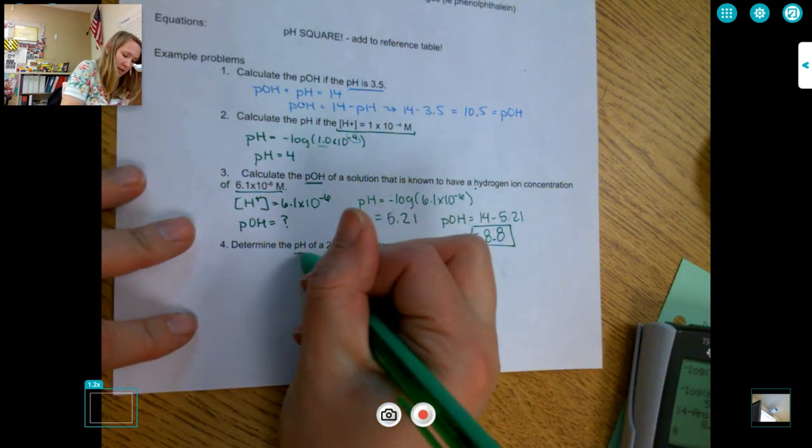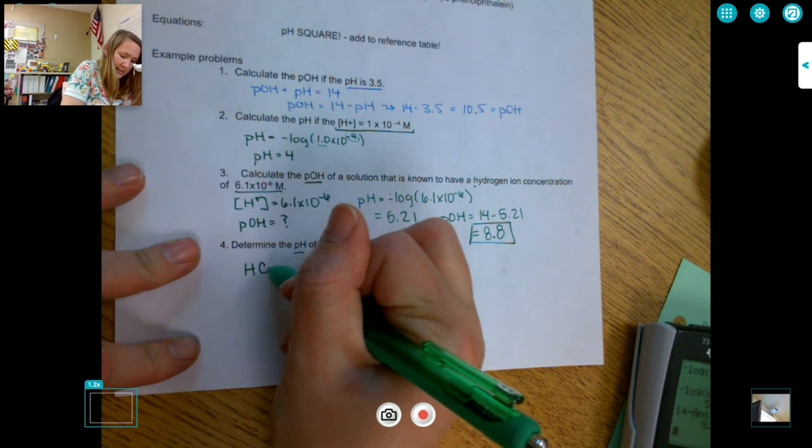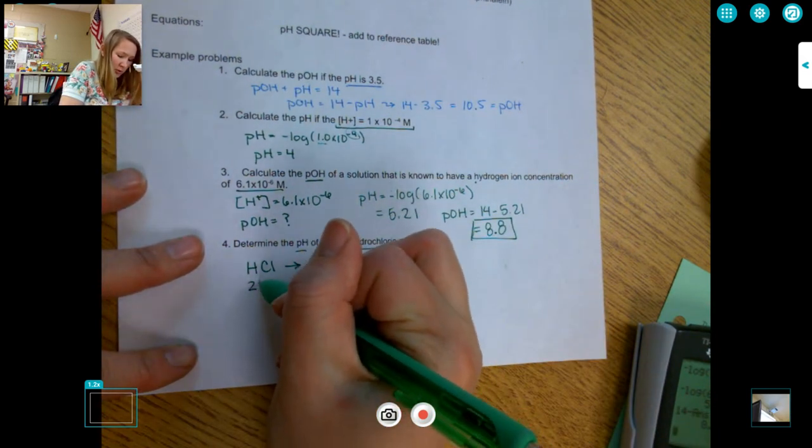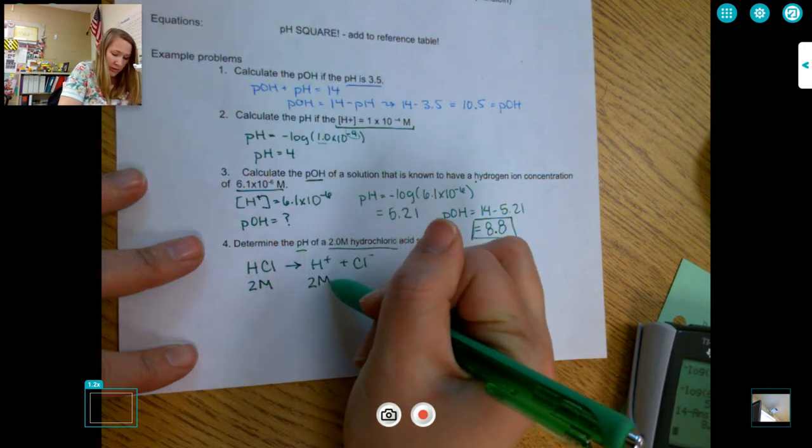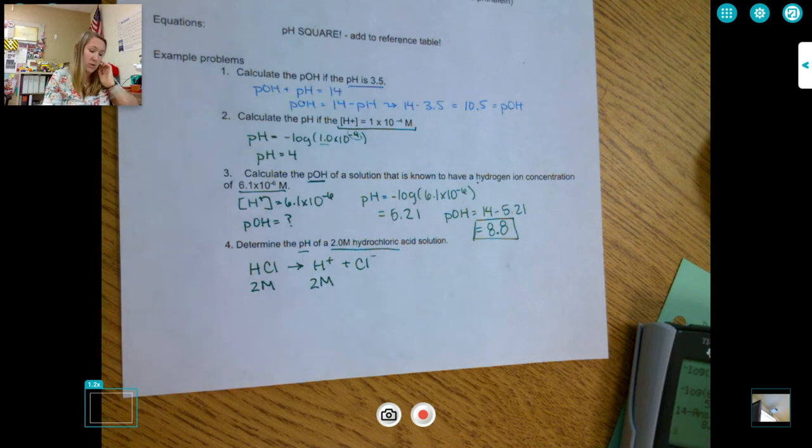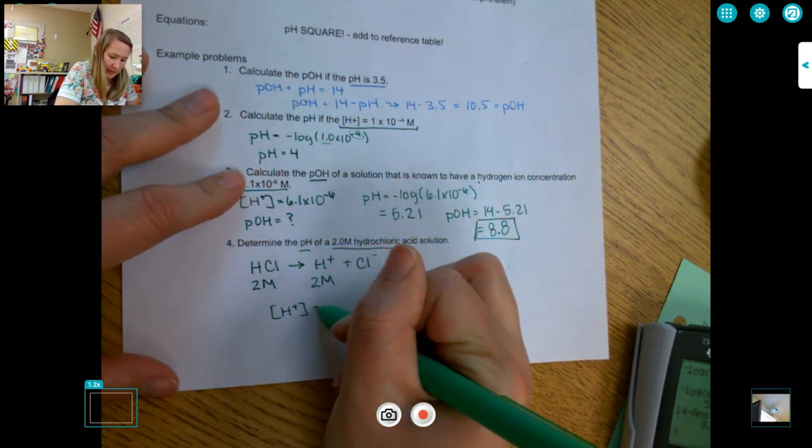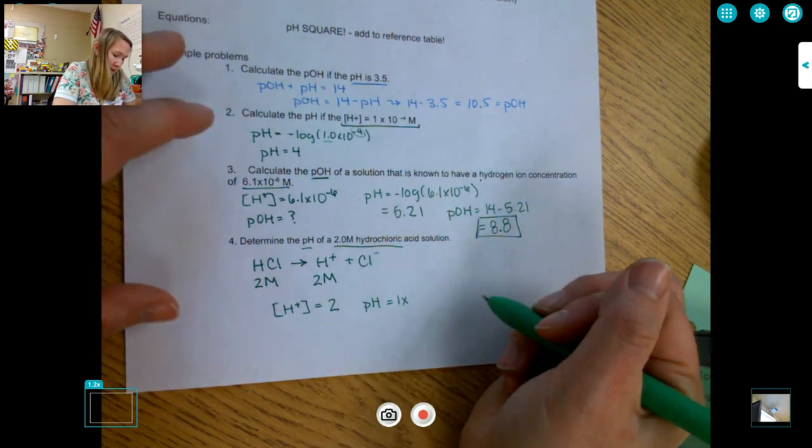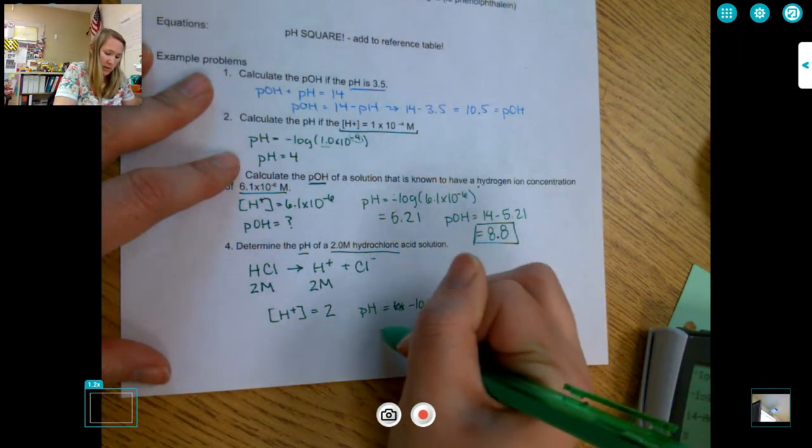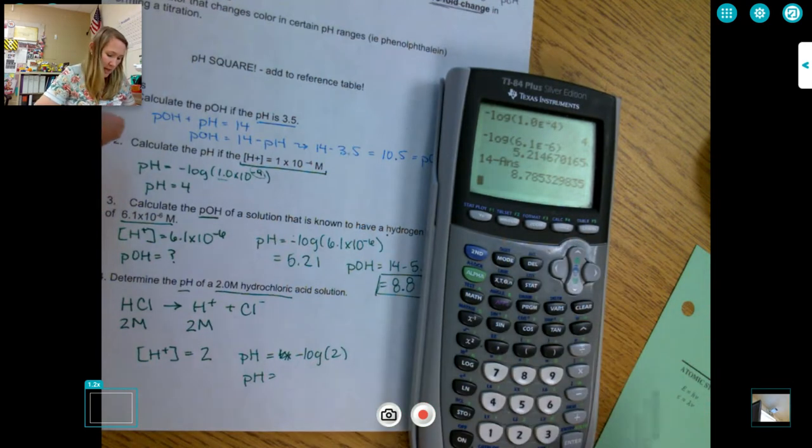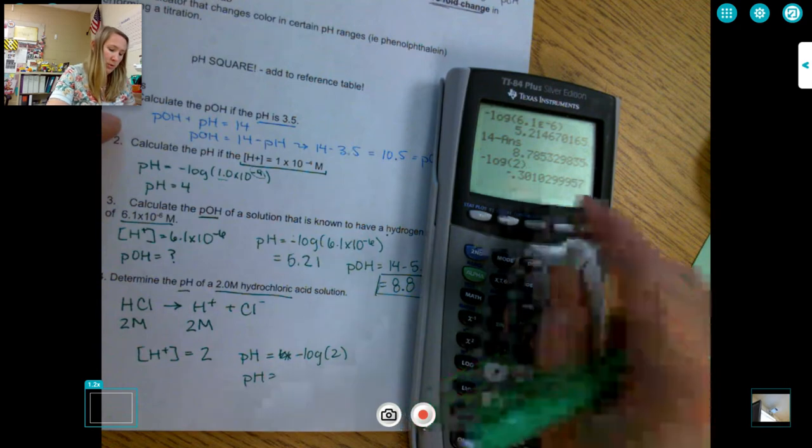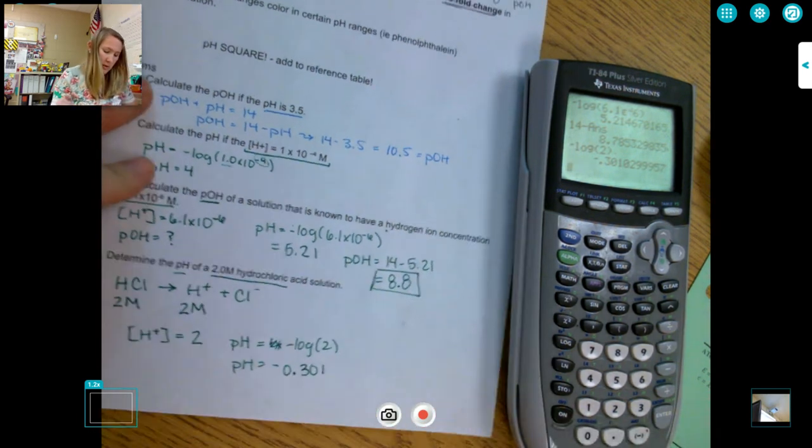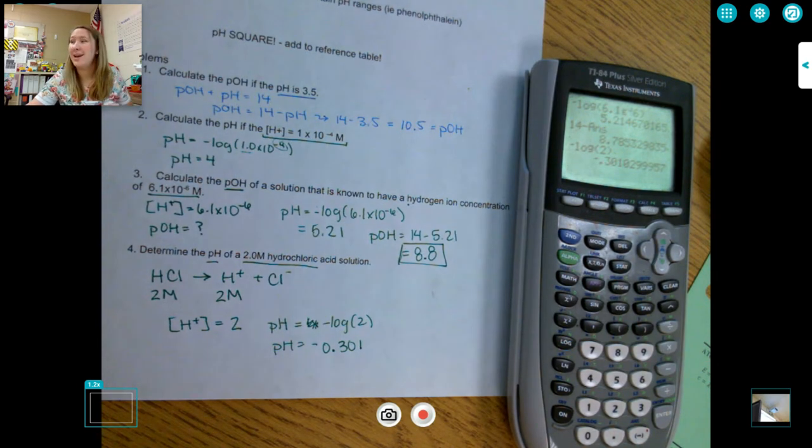Number 4 says, what is the pH if I have a 2 molar hydrochloric acid solution? So remember, hydrochloric acid is one of our strong acids. It's what fully dissociates into hydrogen ions and chloride ions. So remember, the 2 molar hydrochloric acid solution is also 2 molar for my concentration of hydrogen ions. So my hydrogen ion concentration is 2. So my pH is going to be, my pH is the negative log of 2. So my pH, negative log of 2. And I get negative 0.301. Like I said, you can have negative values. So super duper acidic.